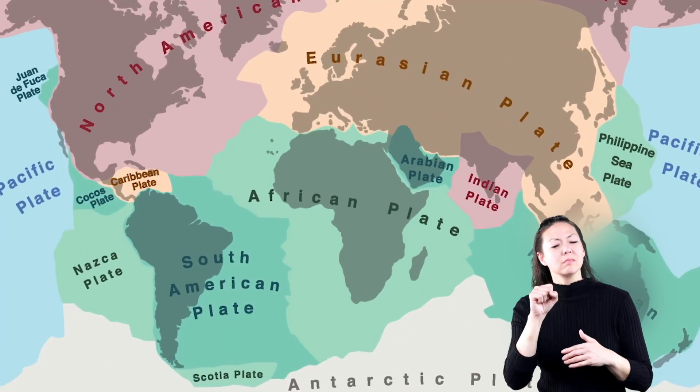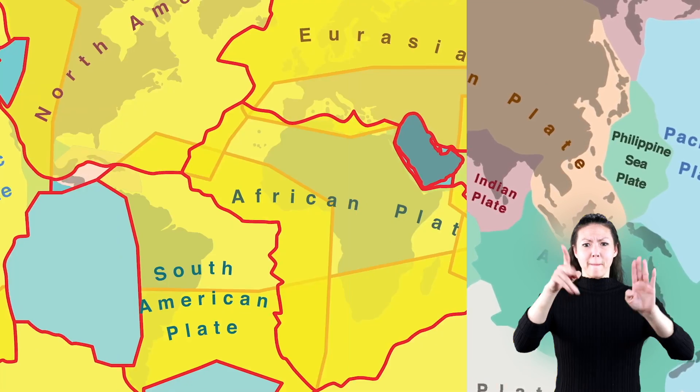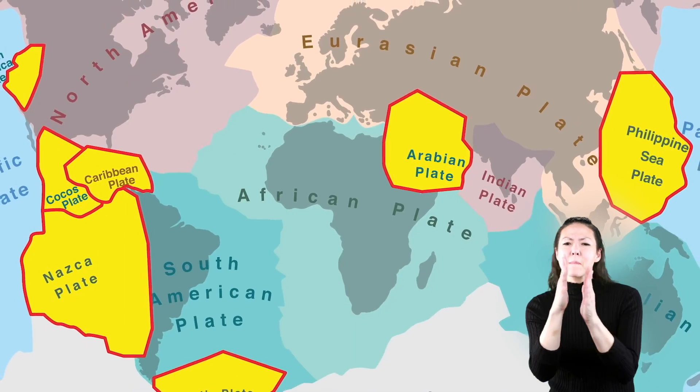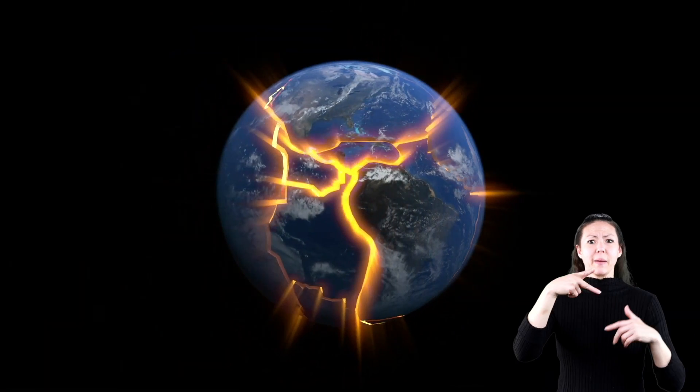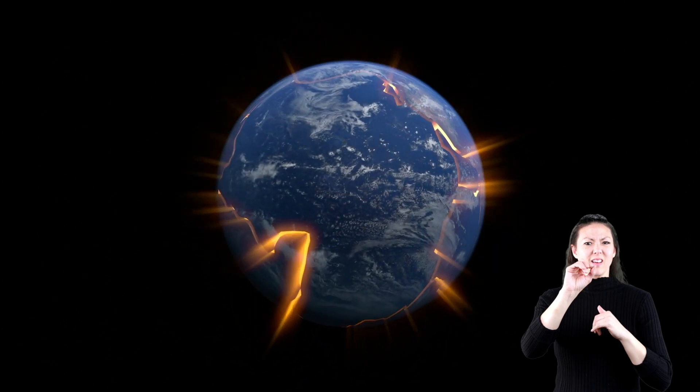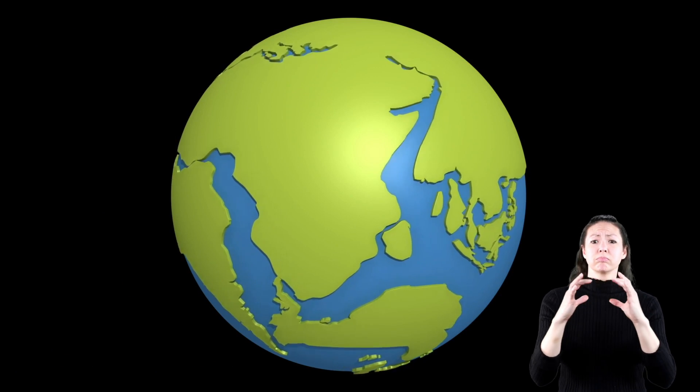Check out this map here. You can see all the plates on earth. As you can see, there are seven major plates and ten minor ones. The first thing you may notice is that the major plates are kind of aligned with the continents. That's not a coincidence. The continents on earth were actually formed due to the movement of these plates over millions and millions of years.